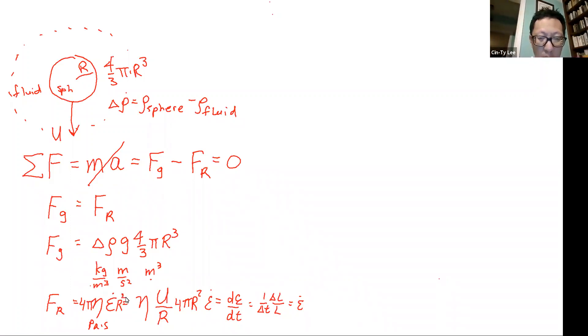Now, when we put these together, this means you have delta, if you put f of g is equal to f of r, then you have delta rho g 4 thirds pi r cubed is equal to f of eta, the velocity r 4 pi r squared. If I rearrange all of this, cancel out terms, I should get something like this,